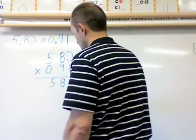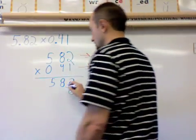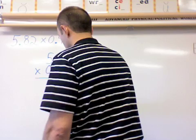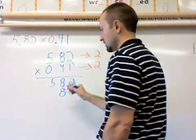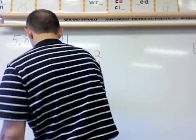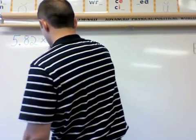My automatic zero here. Four times two. I get an eight here. Four times eight. Thirty-two. So I put my two here and my three up here.